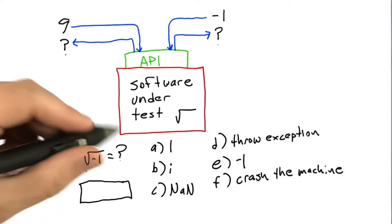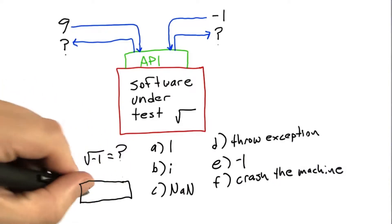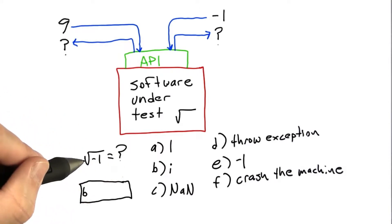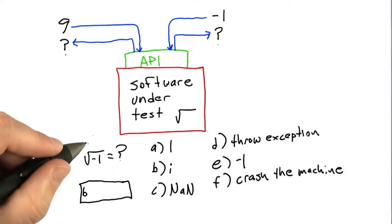Okay, so let's go through the answers. A can't be right. B could be right. It's perfectly acceptable to return i for a question about the square root of minus 1, assuming that we're working in a domain of complex numbers.